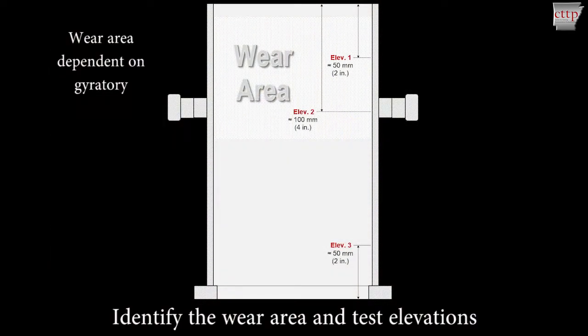Identify the wear area and test elevations for your mold. If the gyratory ram comes down from the top, the wear area will be in the bottom portion of the mold. But if the ram pushes up from the bottom, the wear area will be in the top portion of the mold.